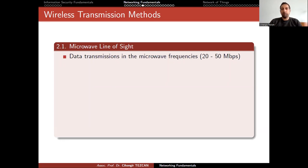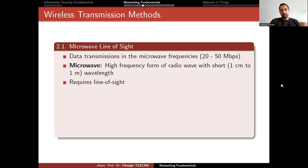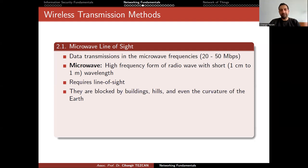We start with microwave line of sight. This is data transmission in the microwave frequencies between 20 to 50 megabits per second. Microwave is a high-frequency form of radio wave with short centimeter to one meter wavelength. The important thing is that it requires line of sight — if there's a building or a hill between the microwave communication, you wouldn't have the communication. They are blocked by buildings, hills, and even the curvature of the Earth.